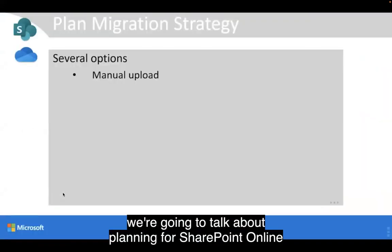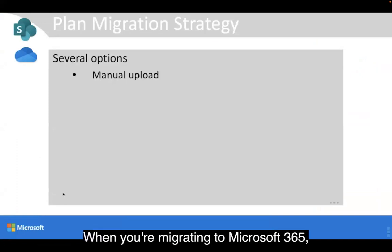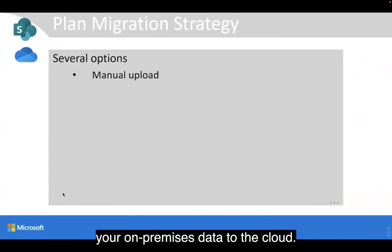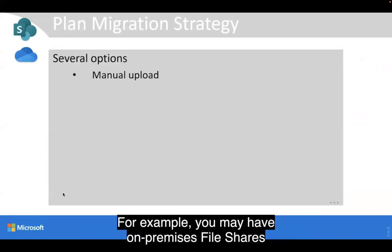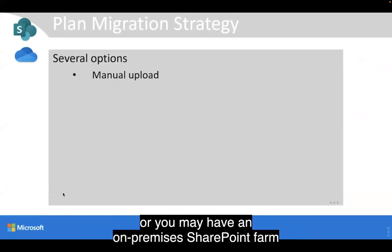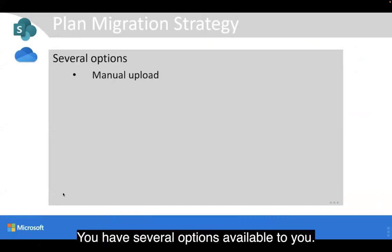In this section, we're going to talk about planning for SharePoint Online and OneDrive for Business. When you're migrating to Microsoft 365, you have to determine how you're going to move your on-premises data to the cloud. For example, you may have on-premises file shares that you want to migrate to SharePoint or OneDrive, or you may have an on-premises SharePoint farm that you want to fully or partly move into SharePoint Online. You have several options available to you.